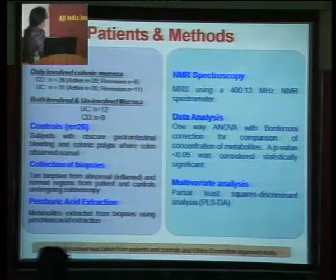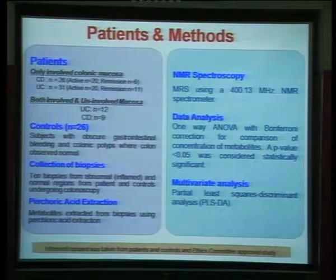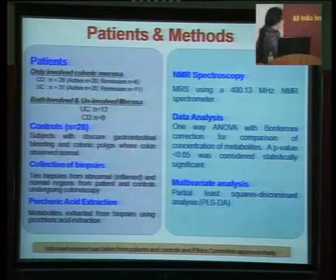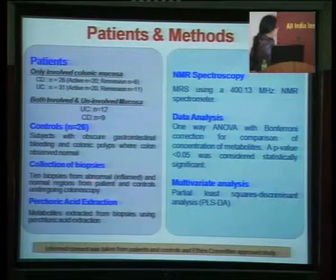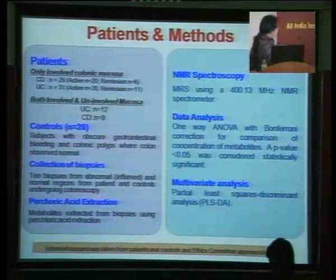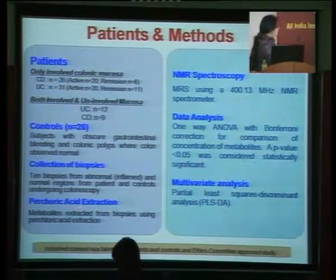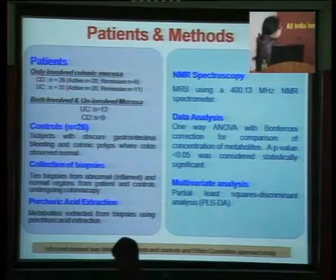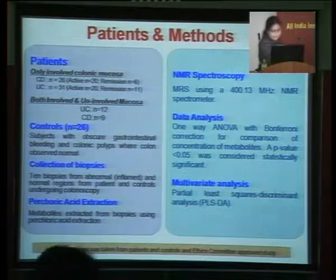This is the experimental procedure. We enrolled these patients. The control subjects had obscure gastrointestinal bleeding and normal-appearing colon. We took biopsies from both abnormal and normal regions from patients and controls undergoing colonoscopy. From these biopsies, using a perchloric acid extraction procedure, metabolites were extracted, NMR was performed, and data was analyzed using univariate and multivariate analysis methods.